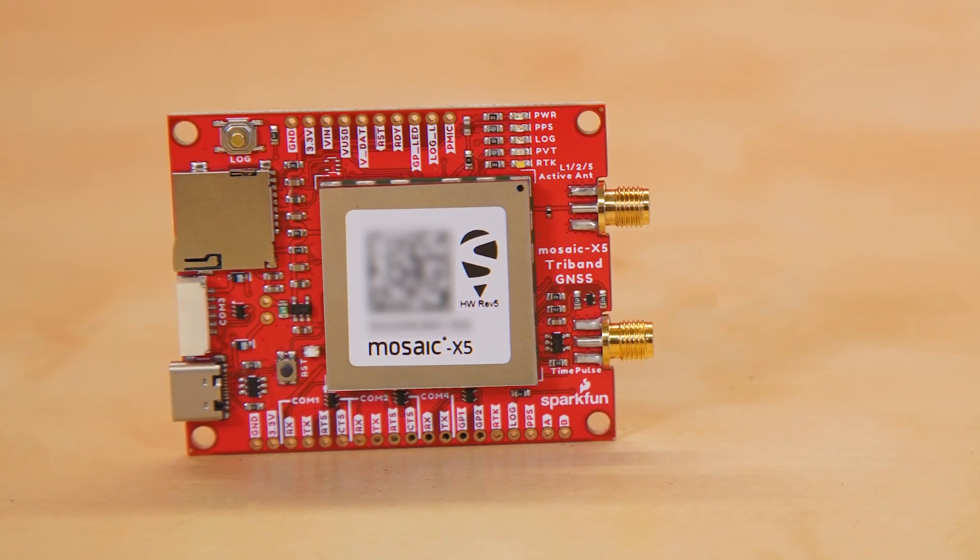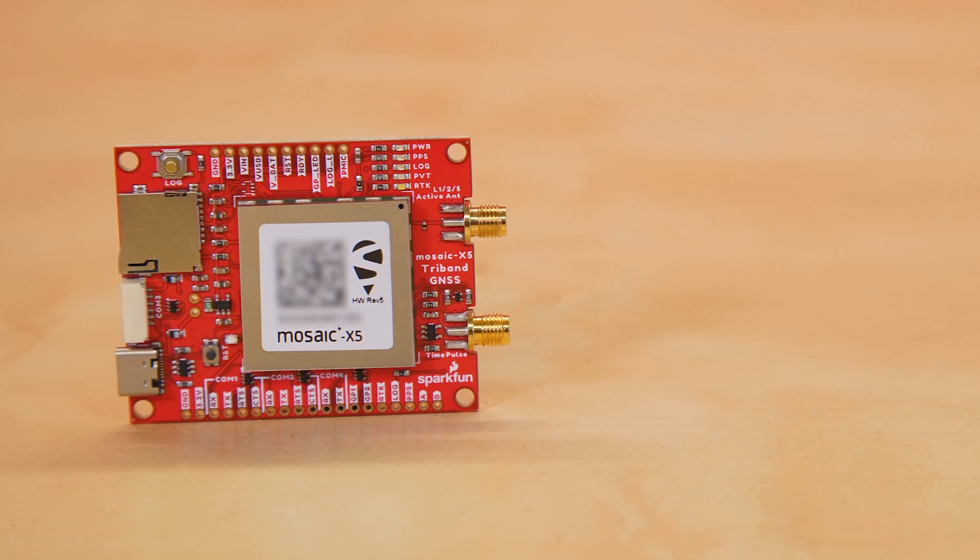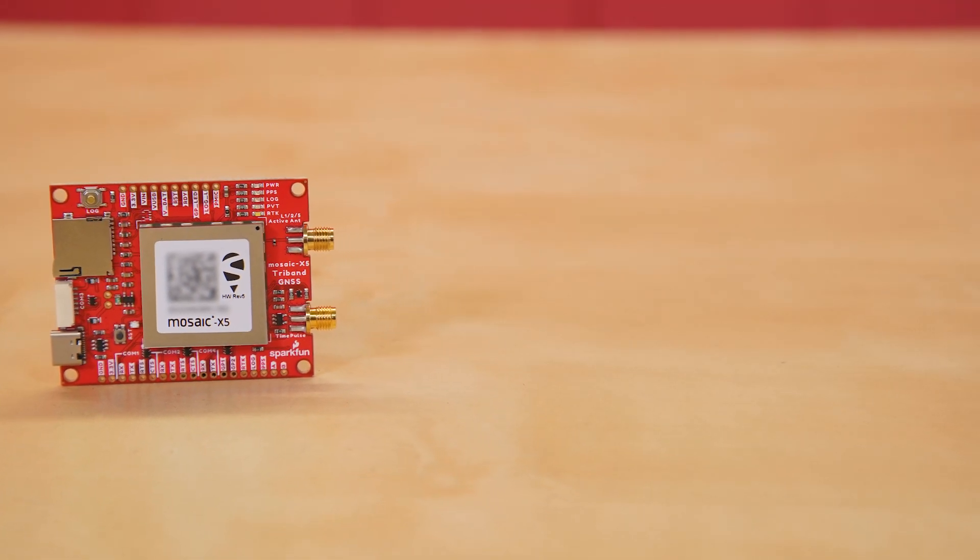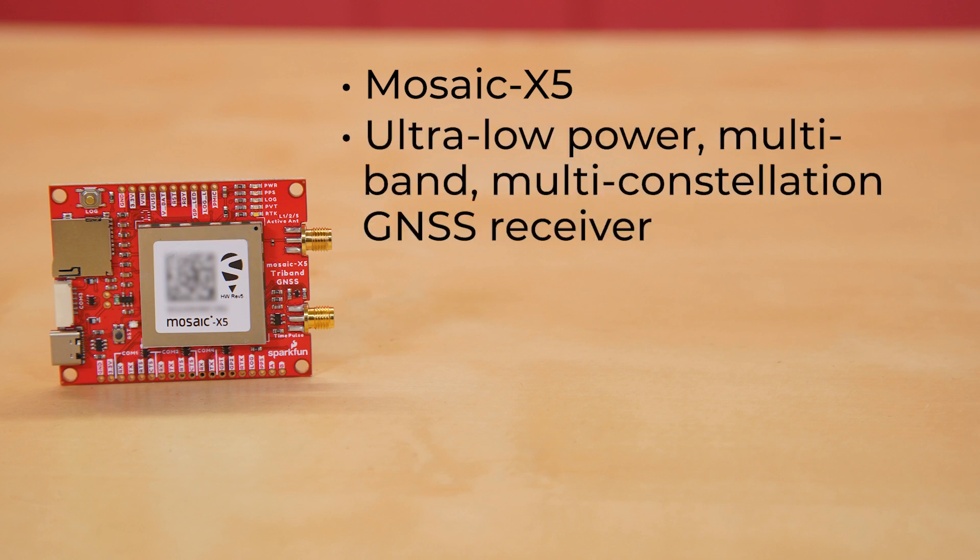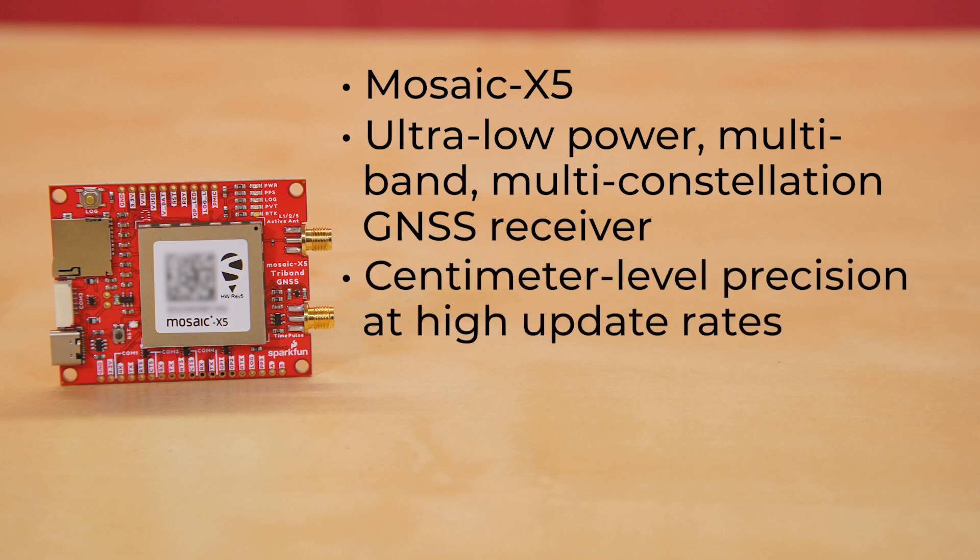At the heart of the tri-band GNSS RTK breakout is Septentrio's most compact, high-precision GNSS receiver, the Mosaic X5. The Mosaic X5 module is an ultra-low-power, multi-band, multi-constellation GNSS receiver capable of delivering centimeter-level precision at high update rates.